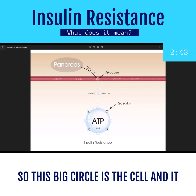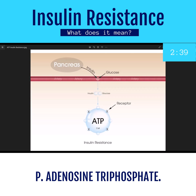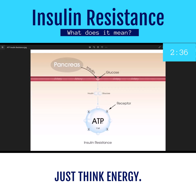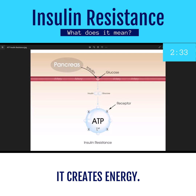So this big circle is the cell. And it creates something called ATP — adenosine triphosphate. Don't worry about that, just think energy. So when this molecule gets in, it creates energy.